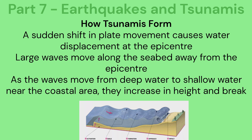How tsunamis form: a sudden shift in plate movement causes water displacement at the epicentre. Large waves move along the seabed away from the epicentre. As the waves move from deep water to shallow water near the coastal area, they increase in height and break.